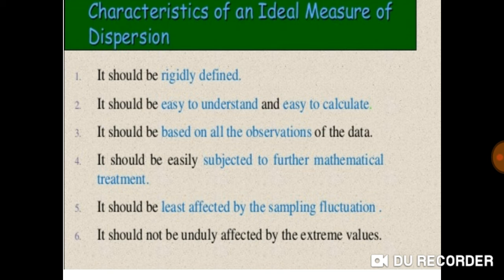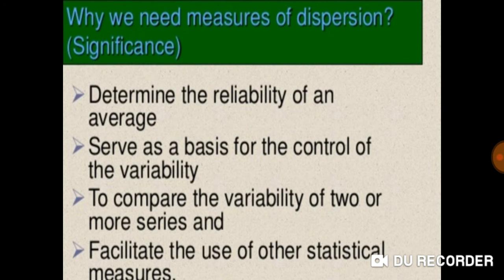Number four: it should be easily subjected to further mathematical treatment. Number five: it should be least affected by the sampling fluctuation. Number six: it should not be unduly affected by the extreme values.